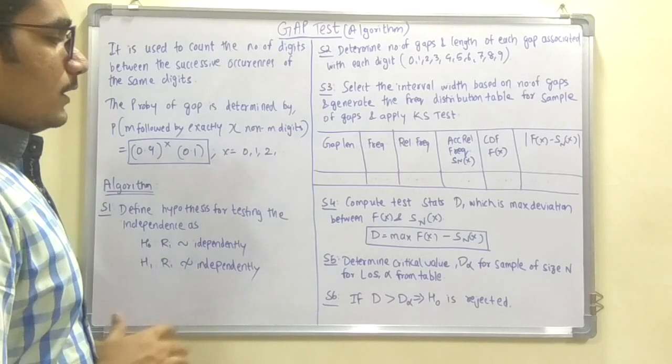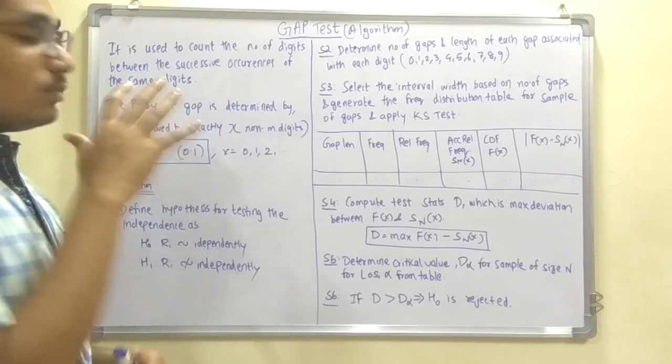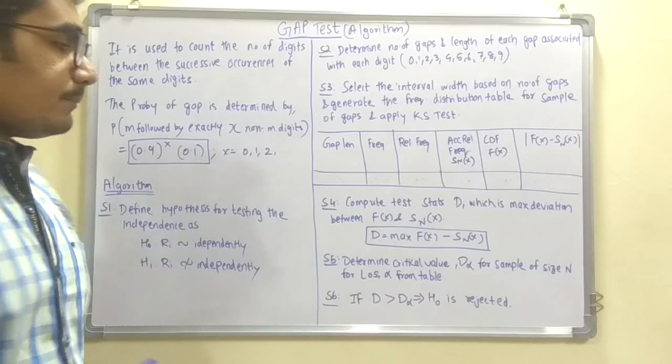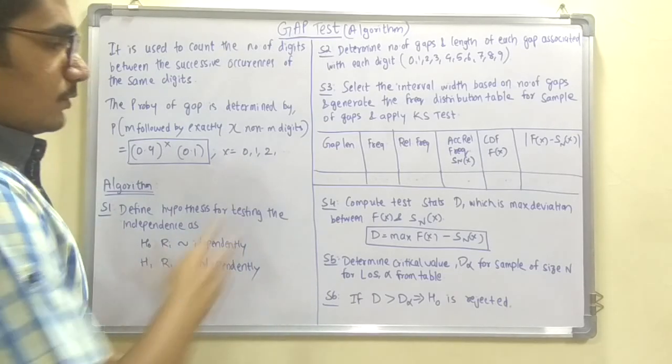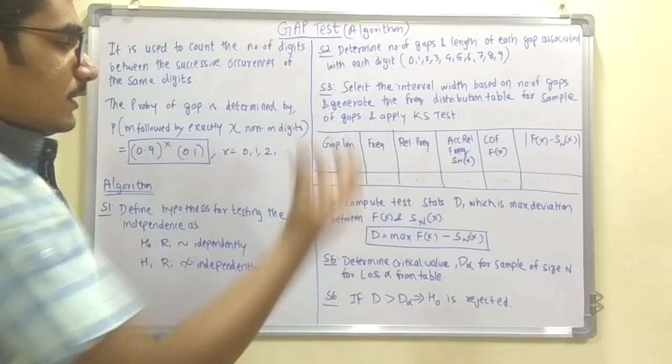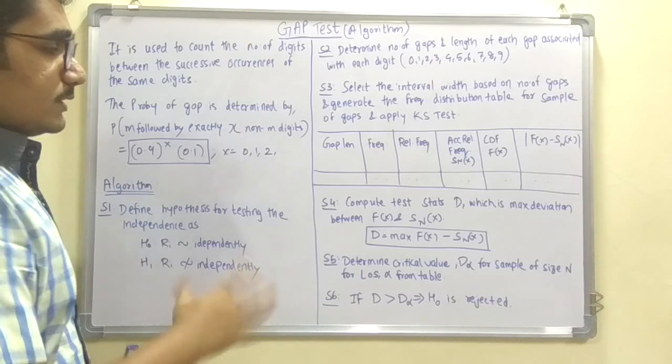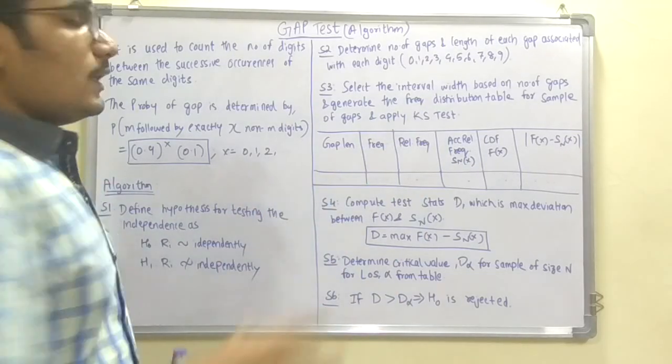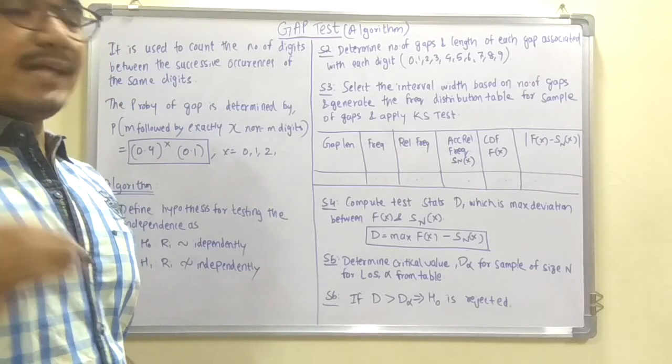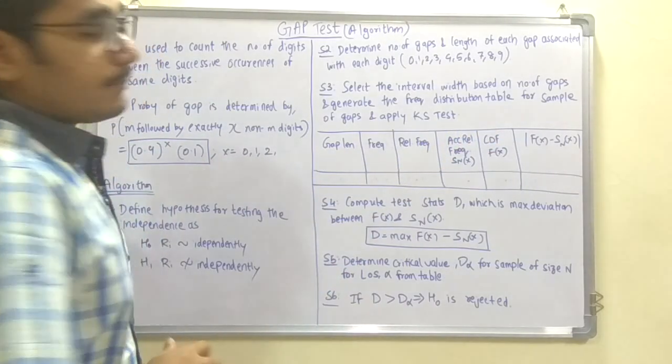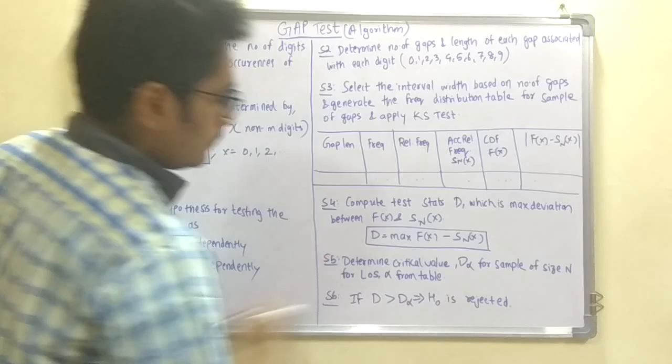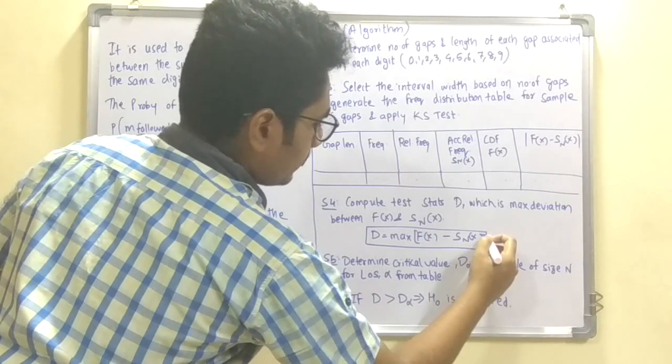Step 4 is to compute the test statistic d, which is the maximum deviation between F(x) and Sn(x). When you calculate d, you get a sequence of answers for digit 0, digit 1, digit 2, up till digit 9 for this final column. From that, you determine the maximum of mod F(x) minus Sn(x). This will give you the max value.